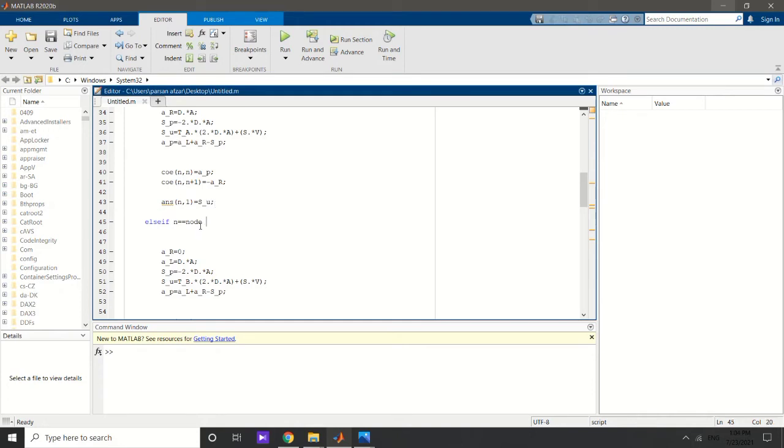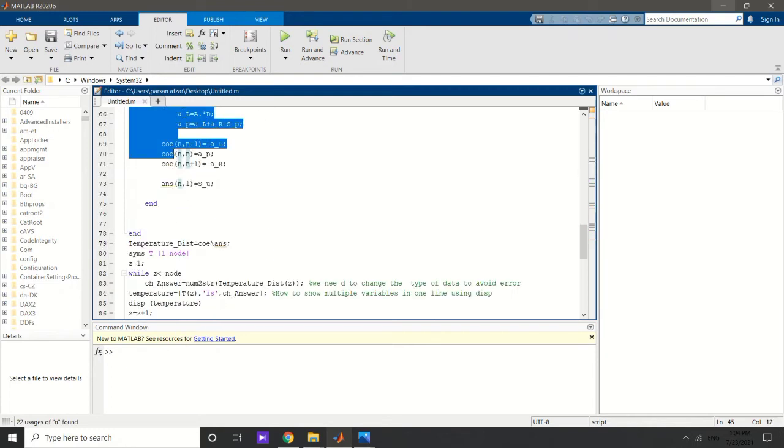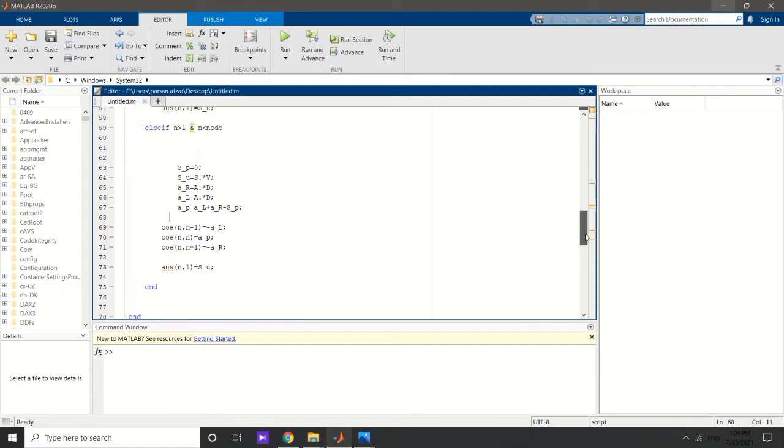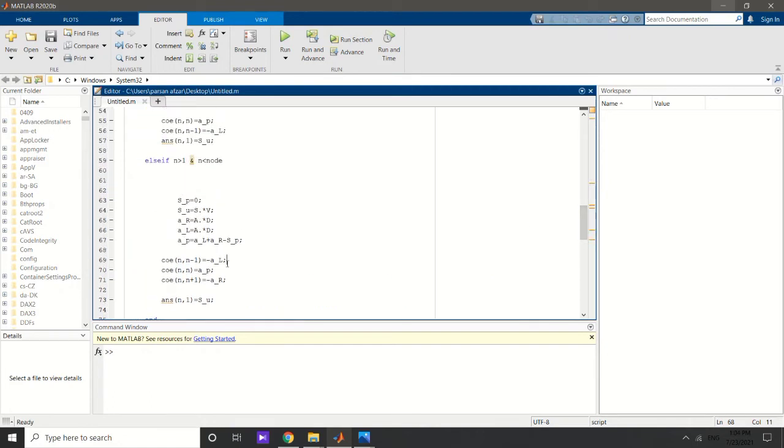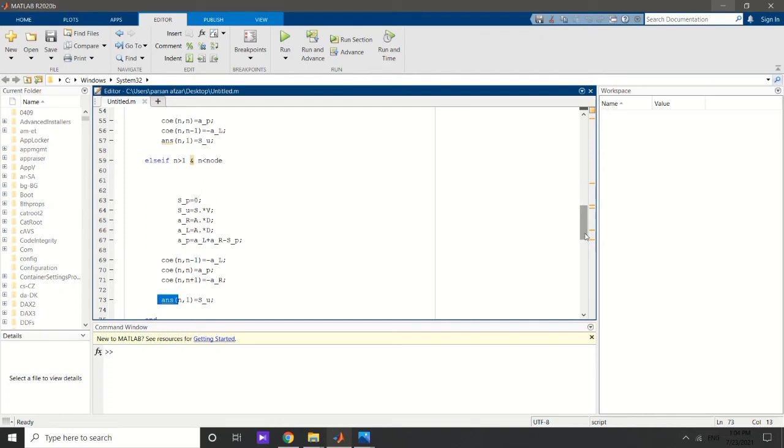Then I do the same procedure for the right boundary when n is equal to the number of nodes. I do the same procedure and lastly I do it for the interior cells. After defining all elements of the coefficient matrix and matrix of answer, it's time to solve the system of linear equations.